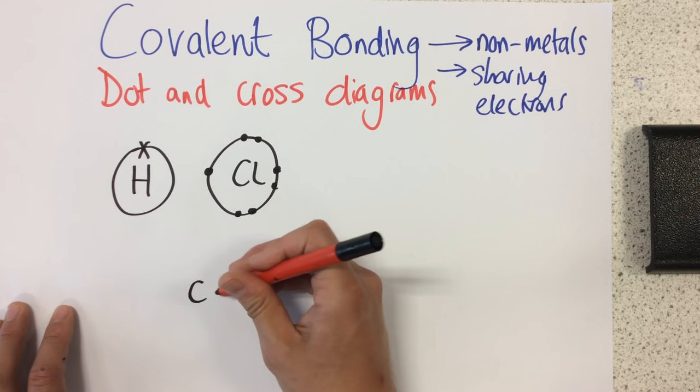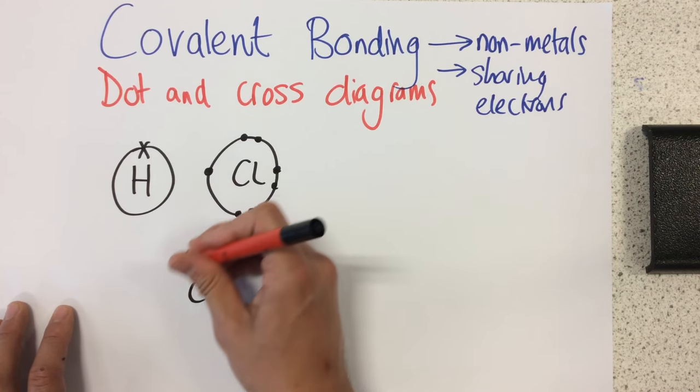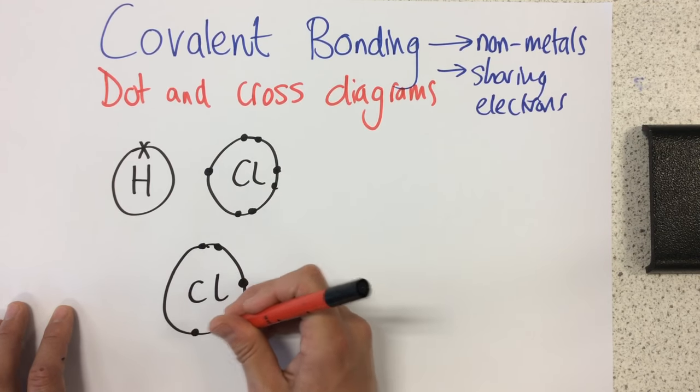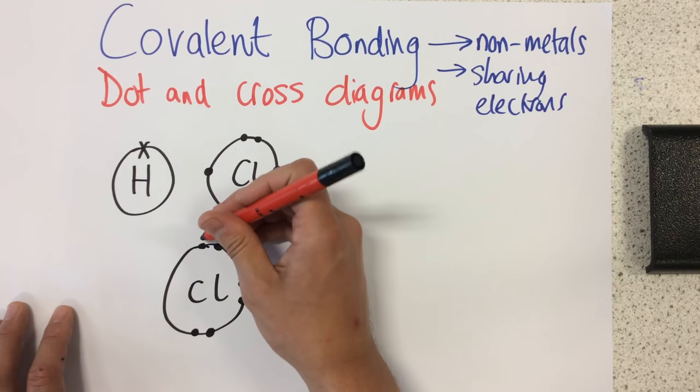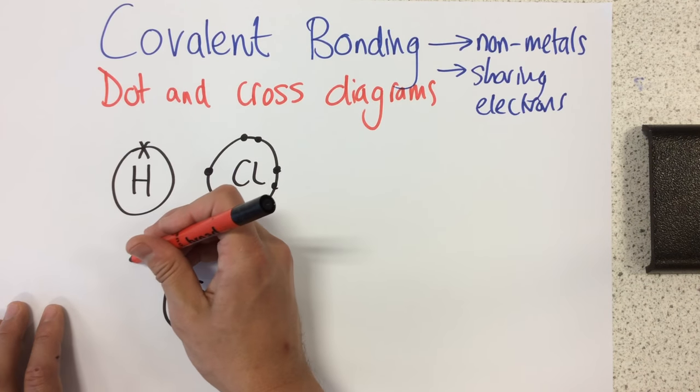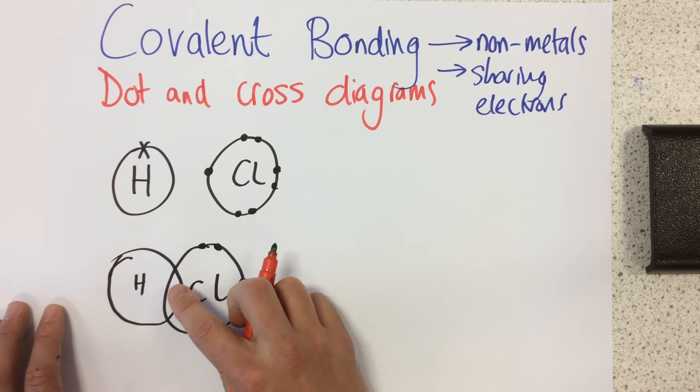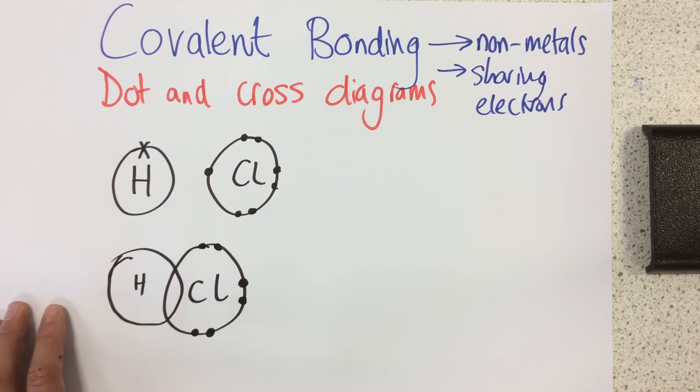And this is how we draw it. Now what I'm going to do to begin with here is I'm just drawing the electrons that are not involved in the covalent bond on the chlorine. So there's the ones that aren't. And here's my hydrogen. Notice how I've drawn these two shells overlapping.